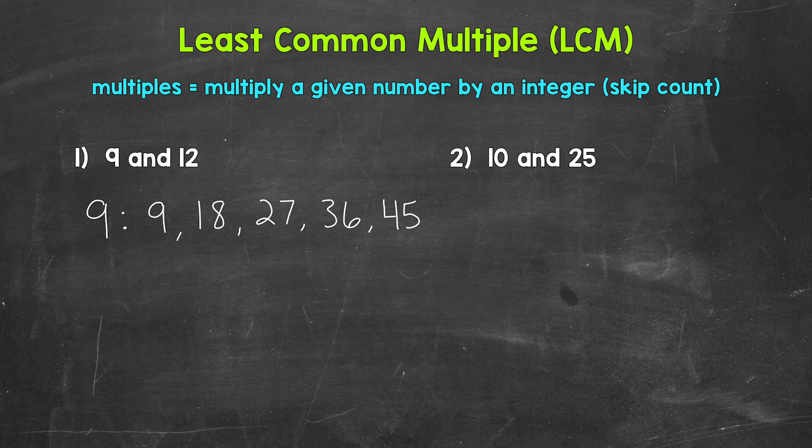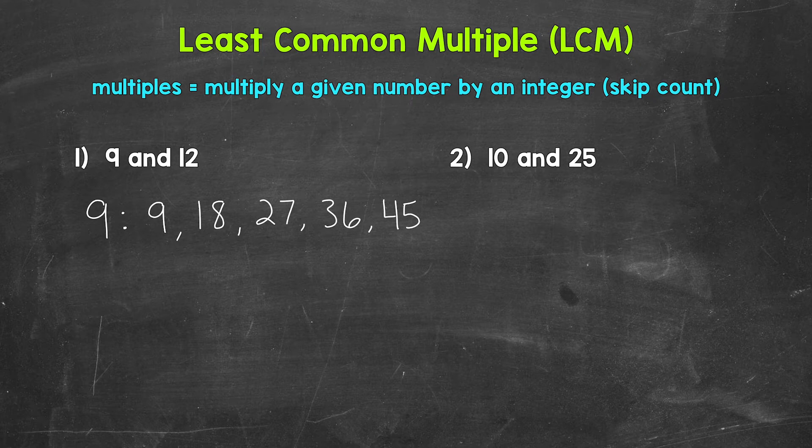Now I stopped at 45 because multiples go on forever. They are endless. They are infinite. My suggestion is to list 4 or 5 multiples when looking for the least common multiple. So list 4 or 5 multiples for each number, look for any in common, and if you don't have any in common, you can always extend the multiples lists.